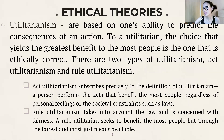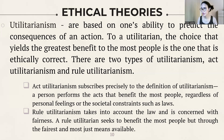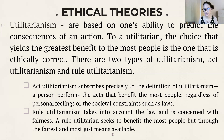The second ethical theory is utilitarianism, which is based on one's ability to predict the consequences of an action. To a utilitarian, the choice that yields the greatest benefit to the most people is the one that is ethically correct. There are two types: act utilitarianism, which focuses on the benefit of most people regardless of personal feelings or law, and rule utilitarianism, which takes into account the law and fairness.